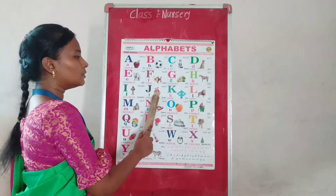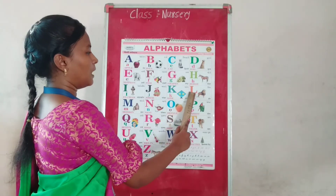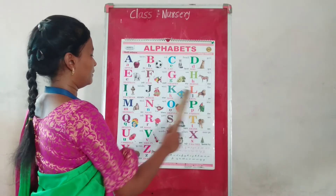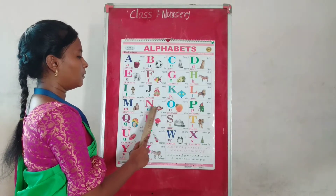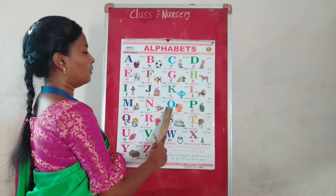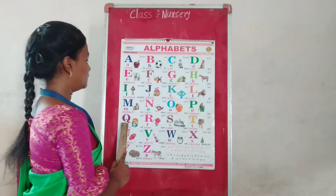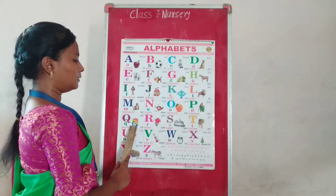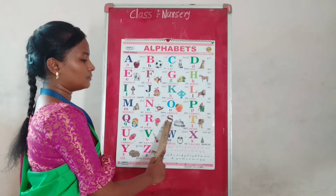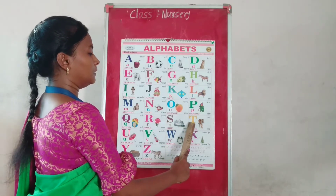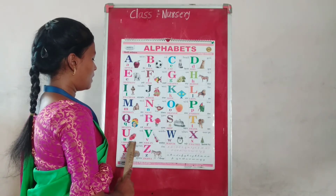J for Joker, A for Kite, L for Lion, M for Monkey, N for Nat, O for Orange, P for Parrot, Q for Queen, R for Rose, S for Ship, T for Tiger. U for Umbrella,